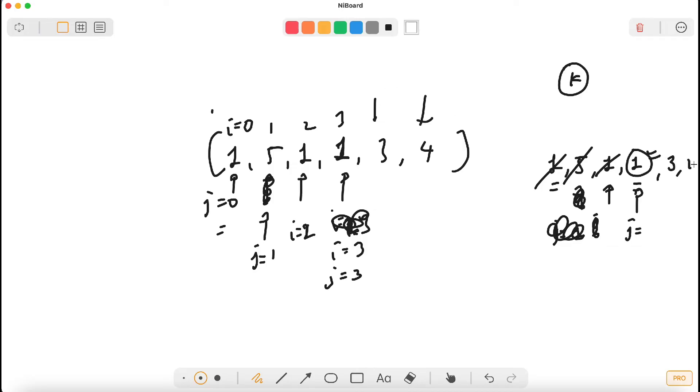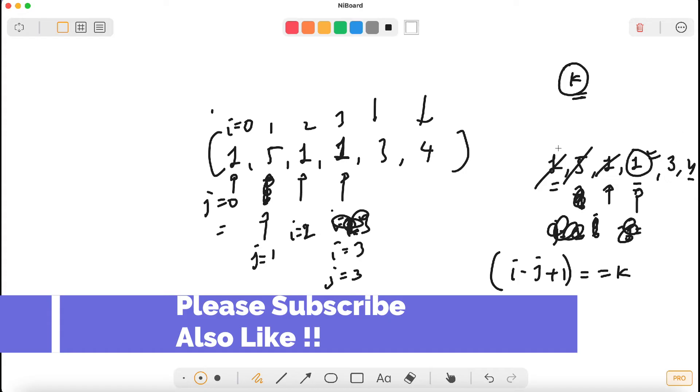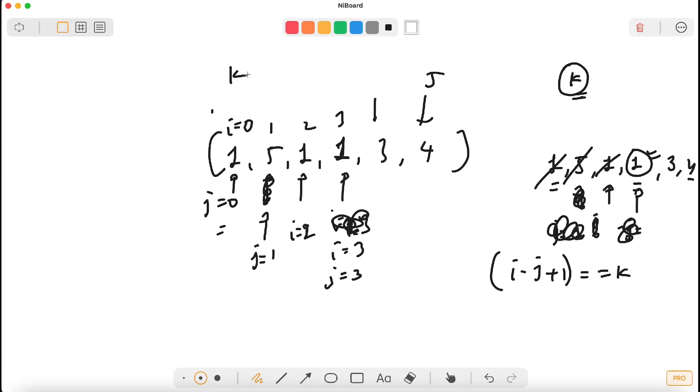How should this be equal? I minus J plus one equal to K. Where I is at index 5, K is 3, so 5 minus 3 plus 1 equals 3. So what is the answer? We will calculate our answer here using prefix of I minus prefix of J minus 1.